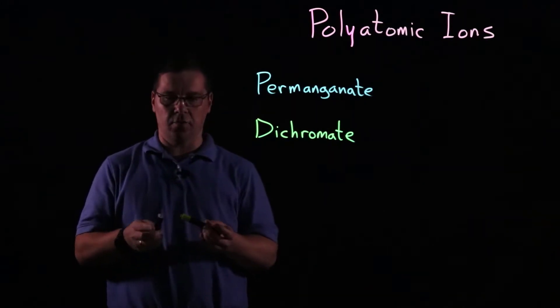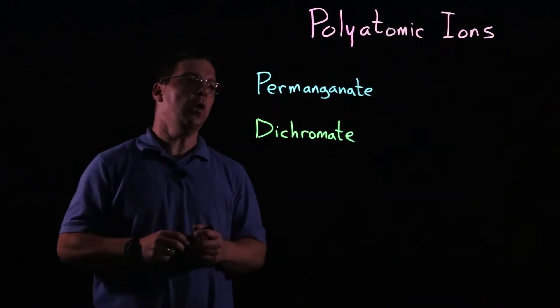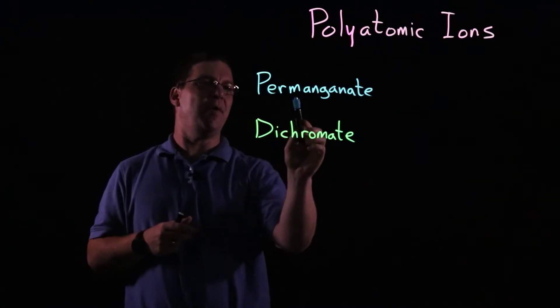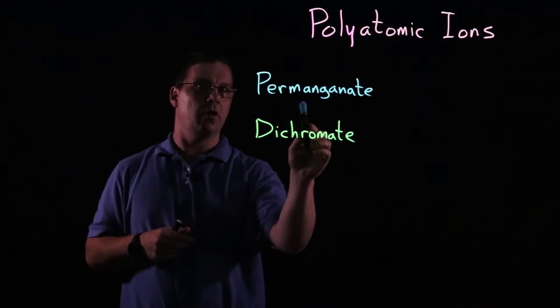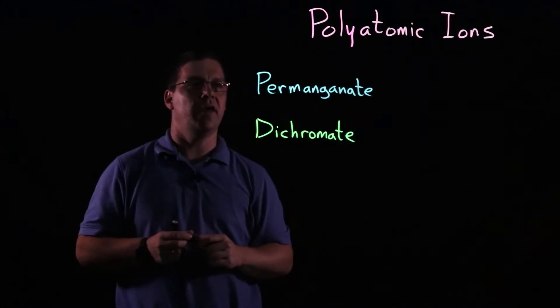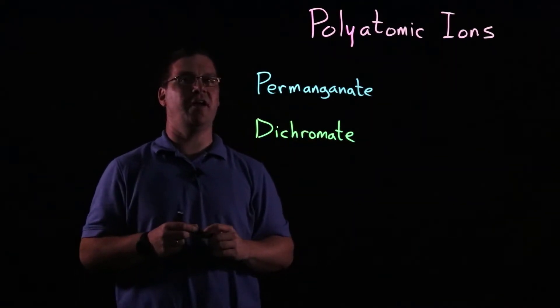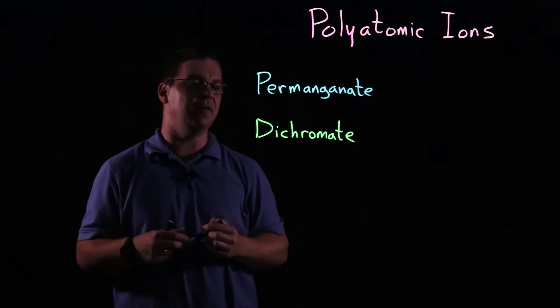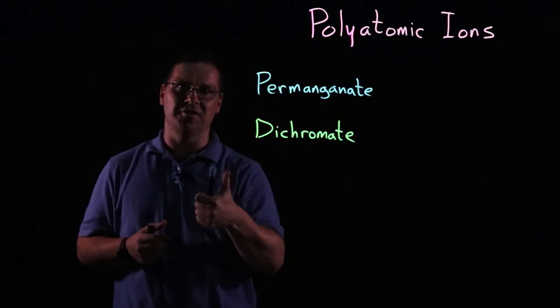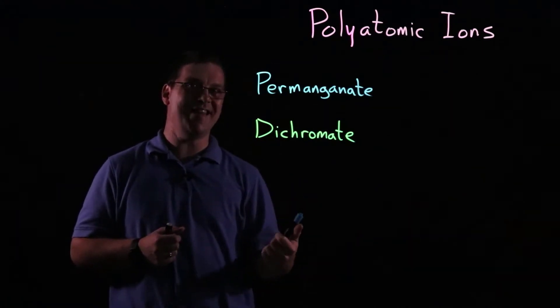So take permanganate, for instance. We see that we have a per prefix, so that told us something. We see M-A-N-G in the middle, so that's where your element is suggested. And hopefully you're careful and you recognize that as manganese, M-N, not magnesium. And we see A-T-E at the end, which told us it's got oxygen, and oxygen is going to be at the end.